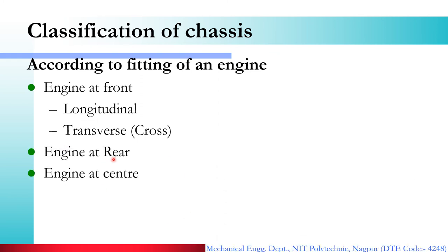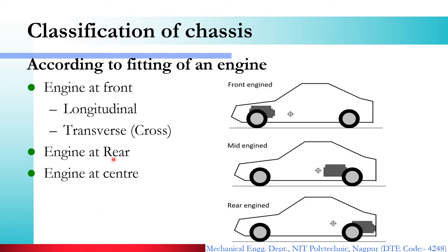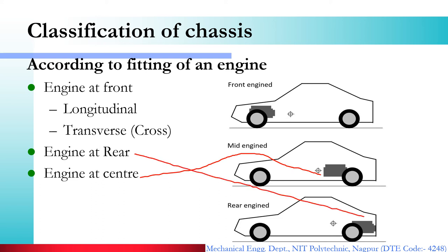After those two possibilities for a front engine, the next option is engine at rear. You can fit the engine at the back. When the engine is at the rear, there is also the center engine arrangement. In center or mid engine, the engine is placed before the rear axle — in the middle of the vehicle body. When the engine is placed before the rear axle, it is known as mid engine or center engine. When the engine is placed beyond the rear axle, it is called rear engine. This rear engine arrangement is basically seen in buses. That is the classification of chassis according to engine position.